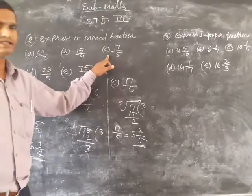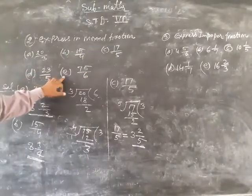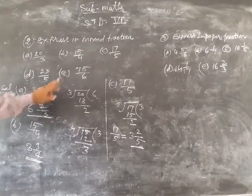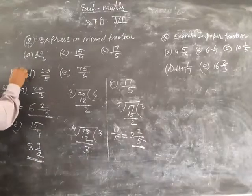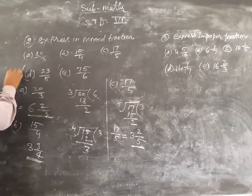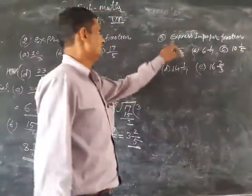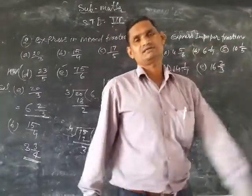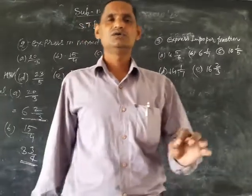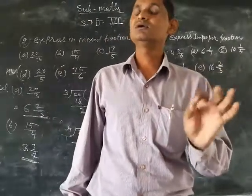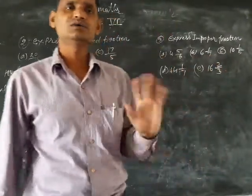So if we see part d and e, these are your homework. There is the next question: express improper fraction. Improper means numerator greater than the denominator.